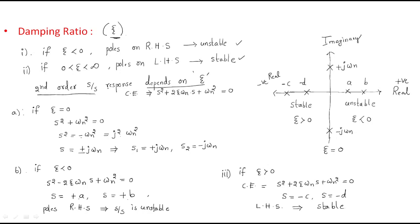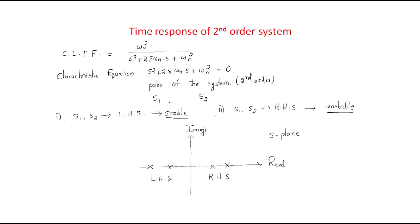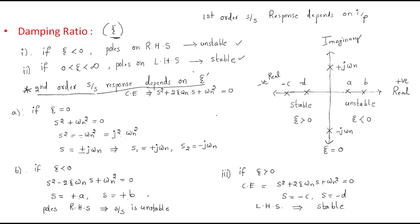So the system response depends on zeta. In a first order system, the response depends only on the input. But in a second order system, the response depends on the input as well as zeta. That is why the damping ratio plays a very important role in second order systems. This concludes the continuation of the time response of the second order system regarding the damping ratio. I hope all of you understand the session. Thank you.